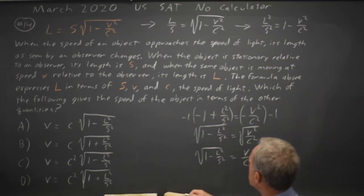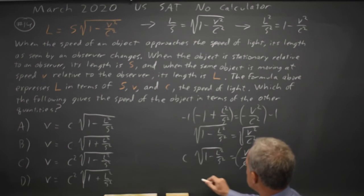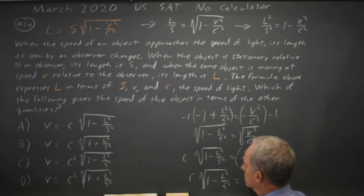And for the last step, I'm going to multiply both sides by C. C over C is 1 so I'm left with C times the square root of 1 minus L squared over S squared equals V.